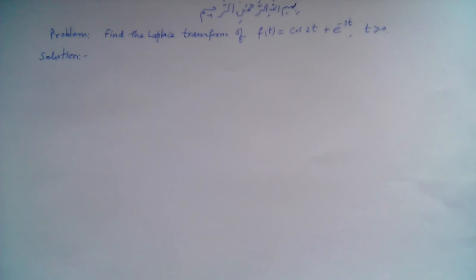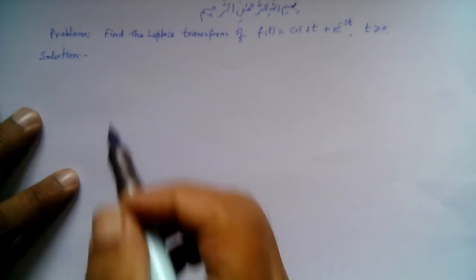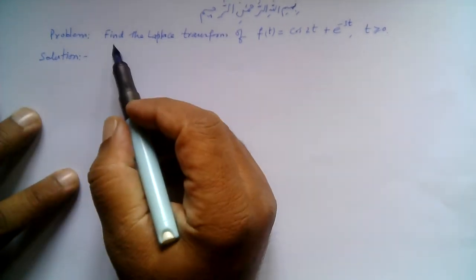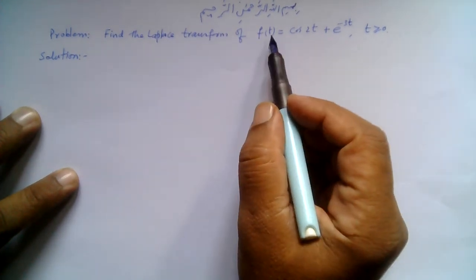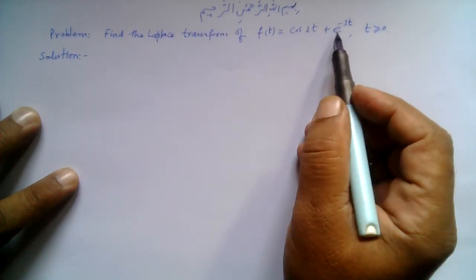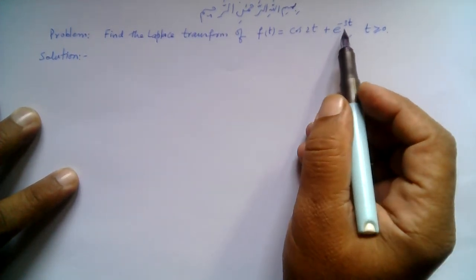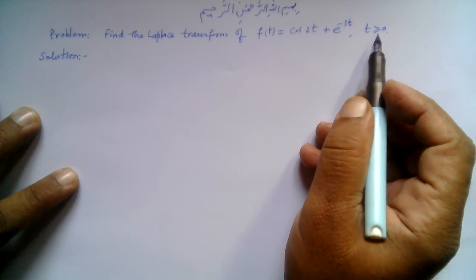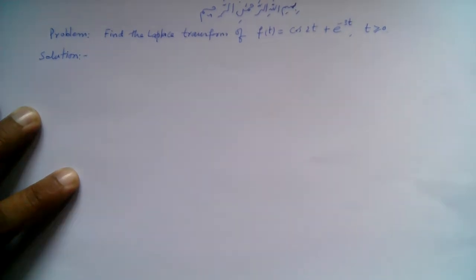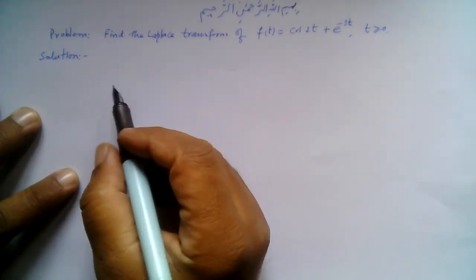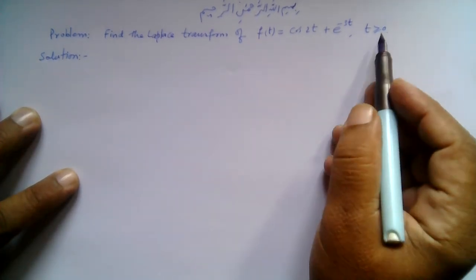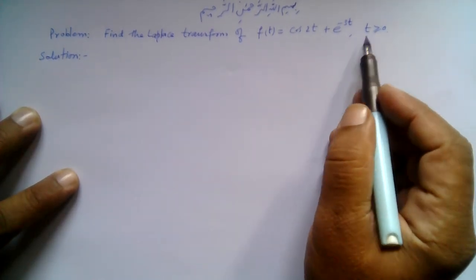Bismillahirrahmanirrahim. Here we are given a problem: find the Laplace transform of f(t) = cos(2t) + e^(-3t) for t greater than or equal to 0. Note that the single-sided Laplace transform is defined for t greater than or equal to 0, which is why this condition is given.